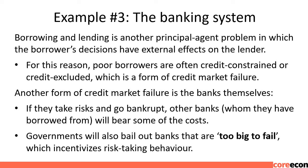Example 3: The Banking System. Borrowing and lending is another principal-agent problem in which the borrower's decisions have external effects on the lender. For this reason, poor borrowers are often credit-constrained or credit-excluded, which is a form of credit market failure. Another form of credit market failure involves the banks themselves: if they take risks and go bankrupt, other banks from whom they have borrowed will bear some of the costs. Governments will also bail out banks that are too big to fail, which incentivizes risk-taking behavior.